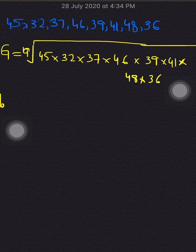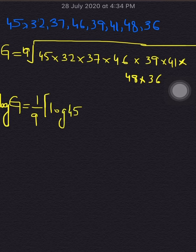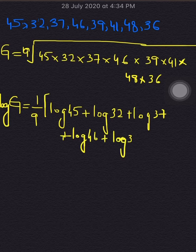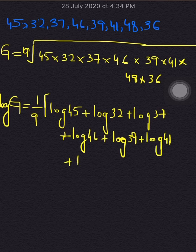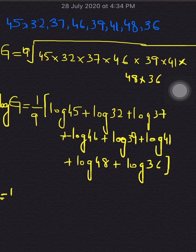The next step is to apply log on both sides. So log of G equals 1 over 9 times the sum: log 45 + log 32 + log 37 + log 46 + log 39 + log 41, and so on. I am applying log on the whole term on both sides.